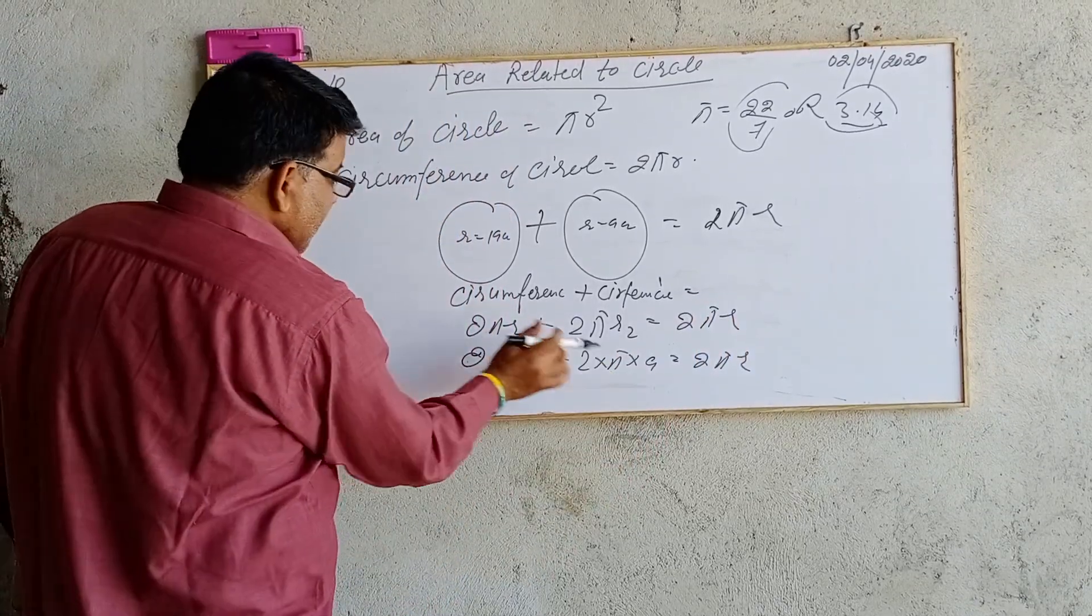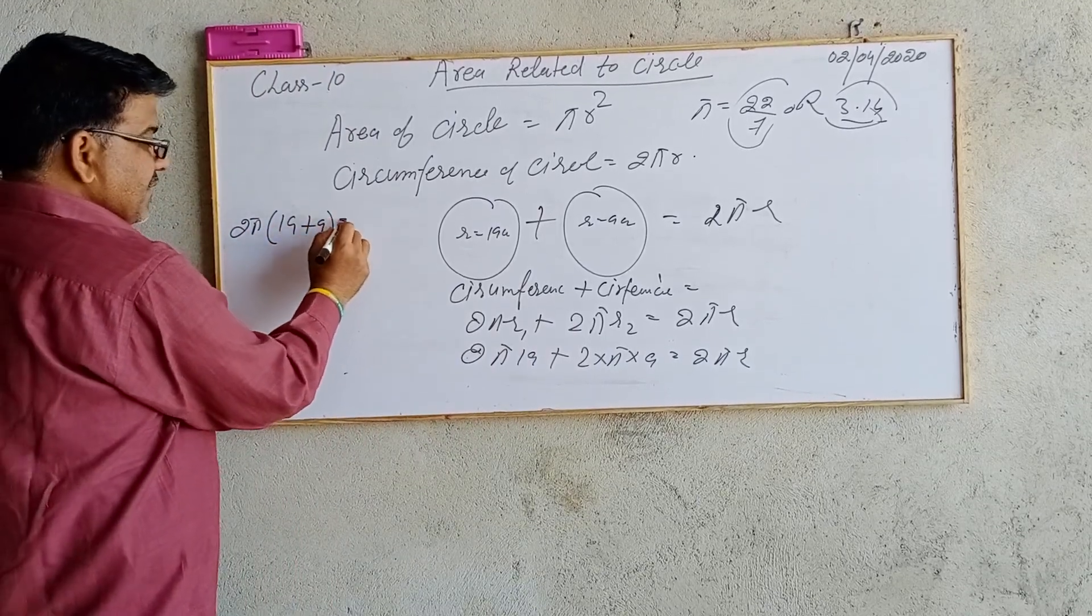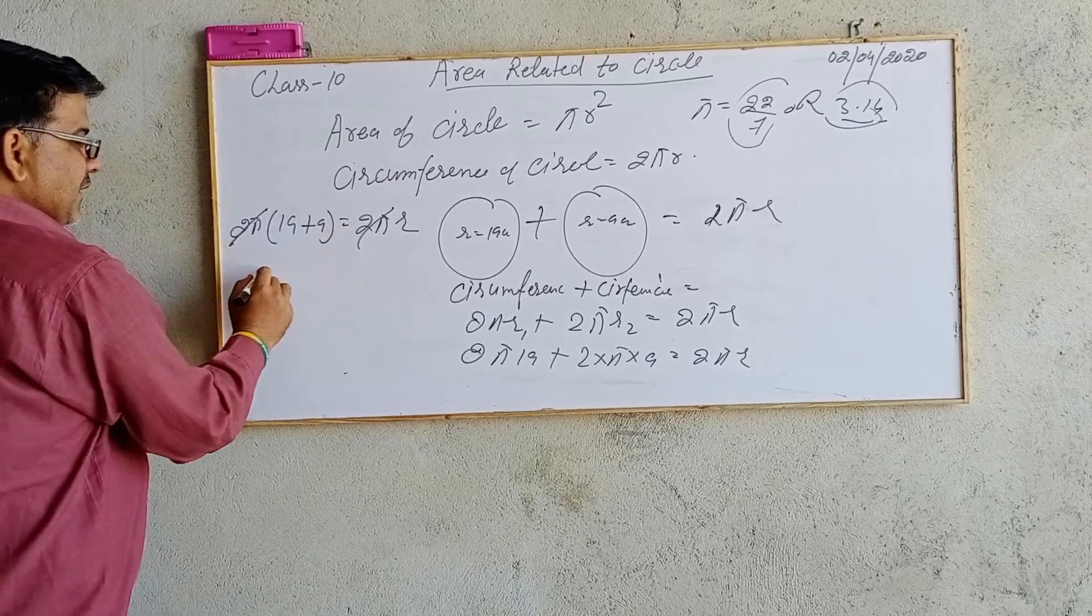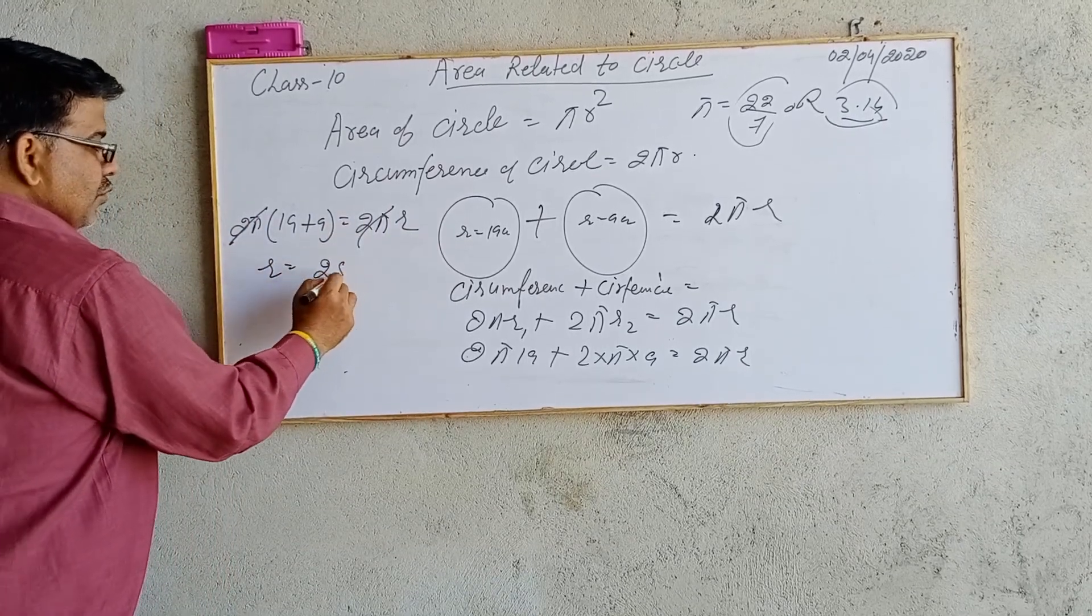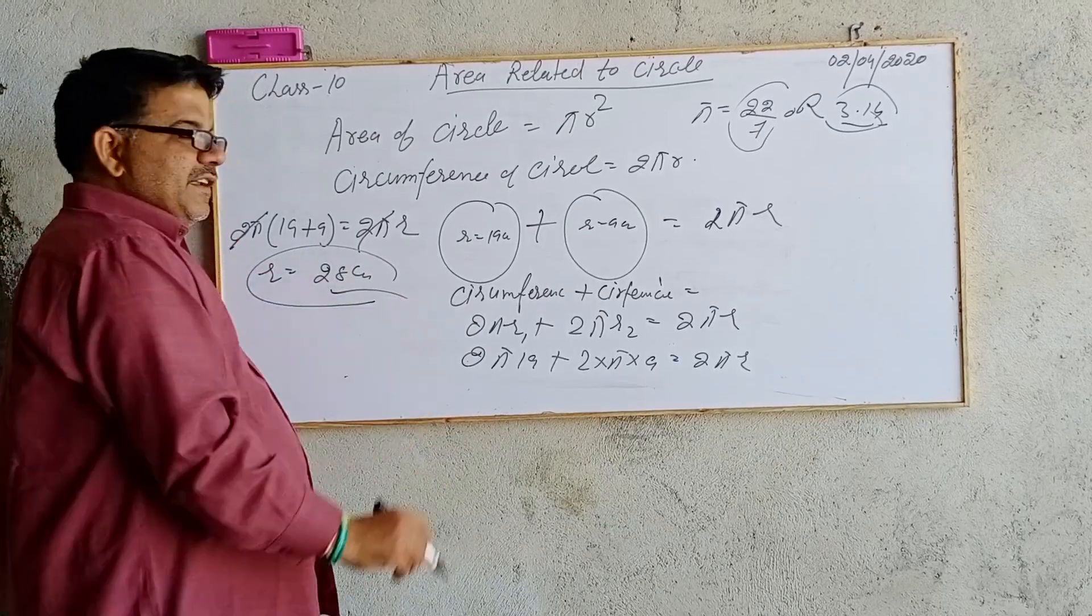We can combine: 2π(19 + 9) equals 2πr. 2π cancels on both sides, then r equals 19 plus 9, which is 28 cm. The radius of the new circle is 28 cm.